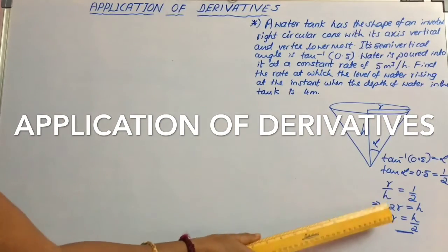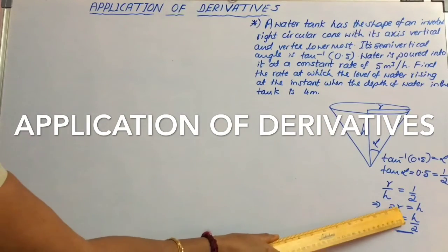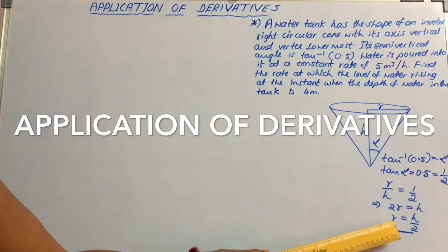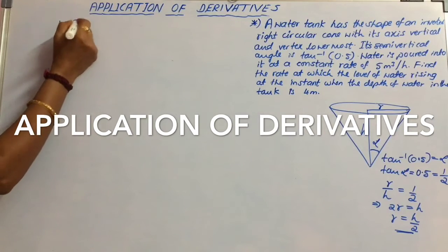So r by h is half. If we cross multiply, 2r equals h, or r is equal to h by 2. Let us consider the volume of the cone.